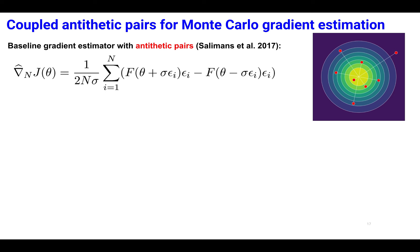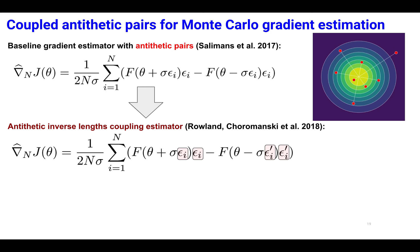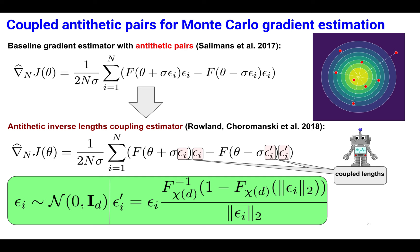Here our method can successfully replace estimators of gradients used recently by Salimans et al. for policy learning. We obtain the so-called antithetic inverse length coupling estimator with sensing directions within an antithetic pair, coupled as shown in the green box where F_chi stands for the CDF function.